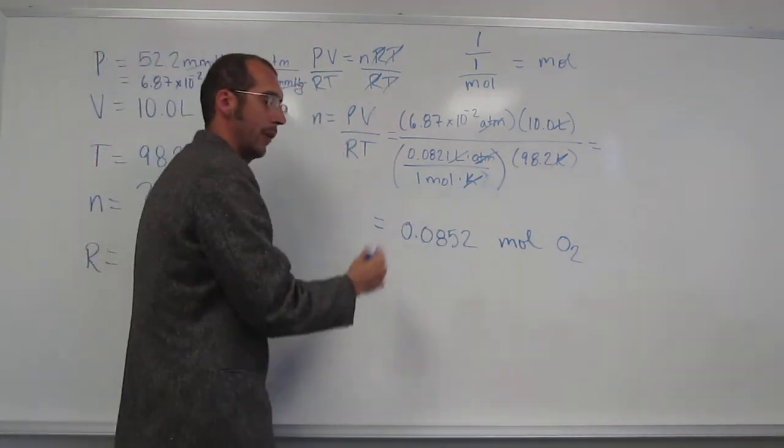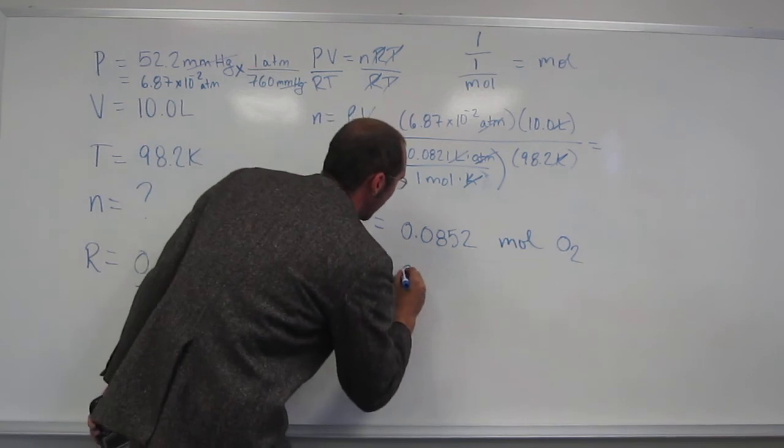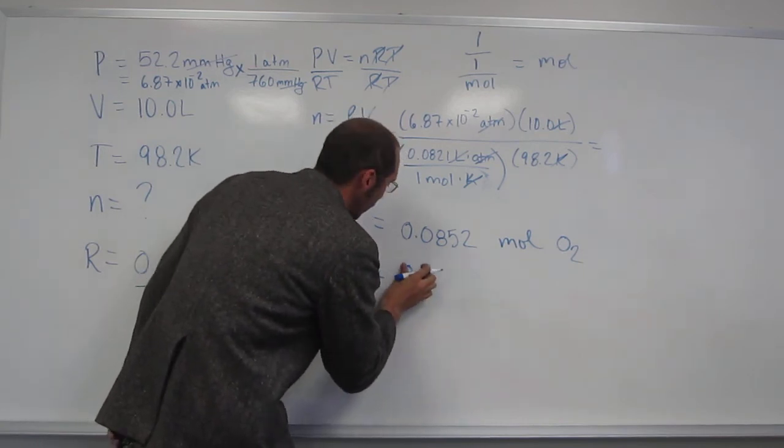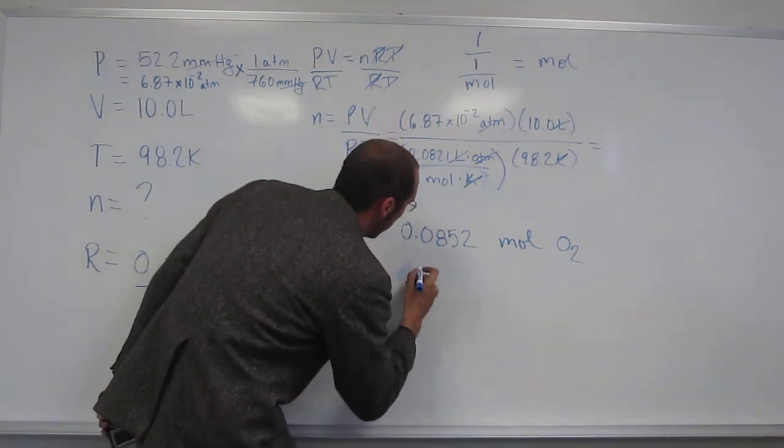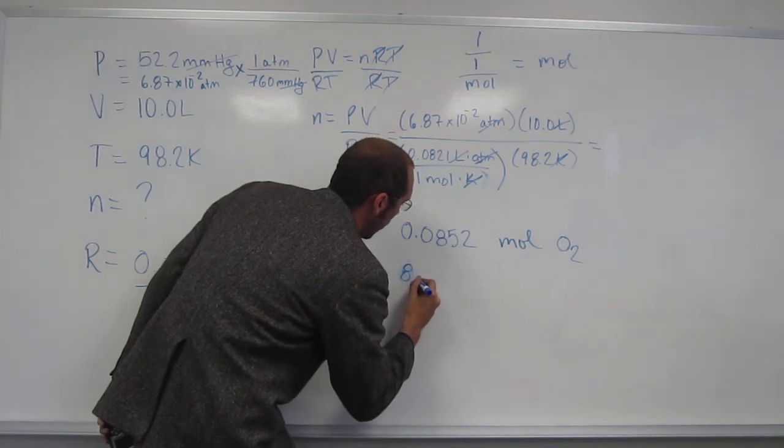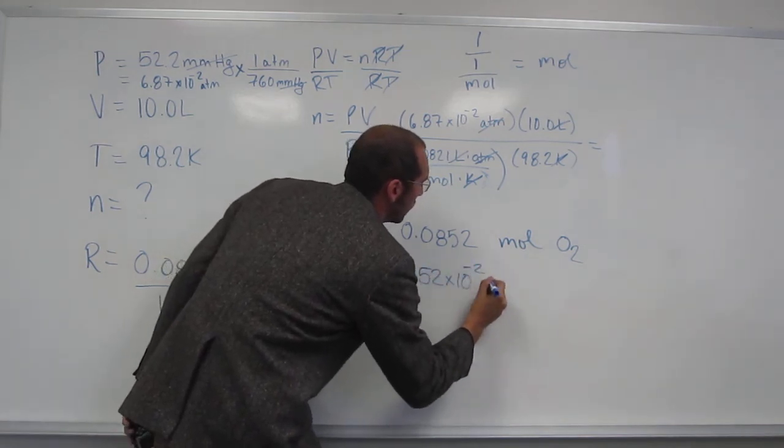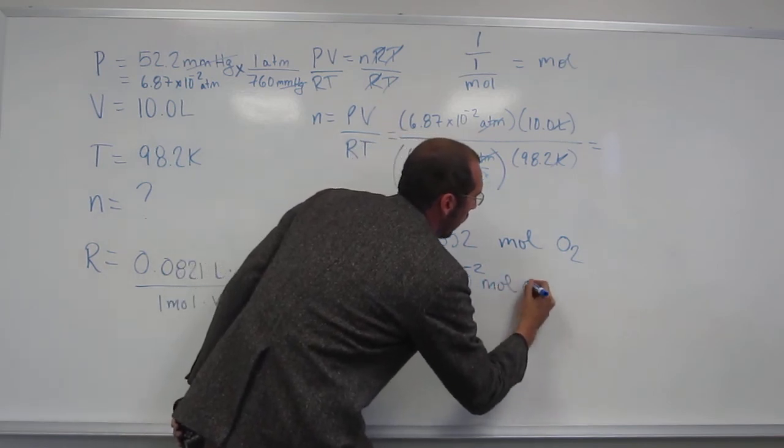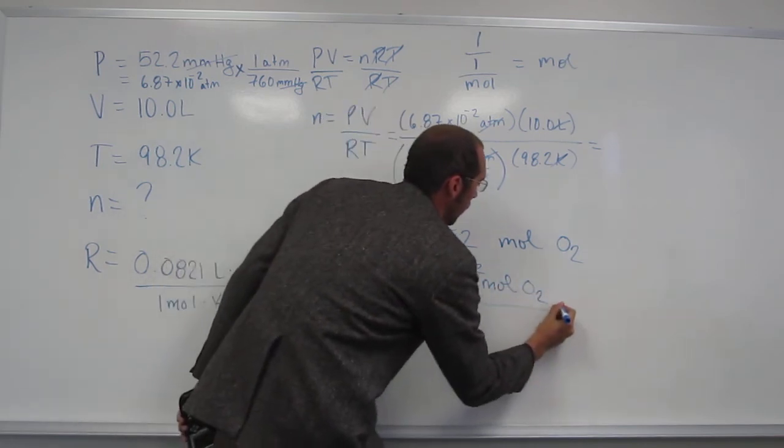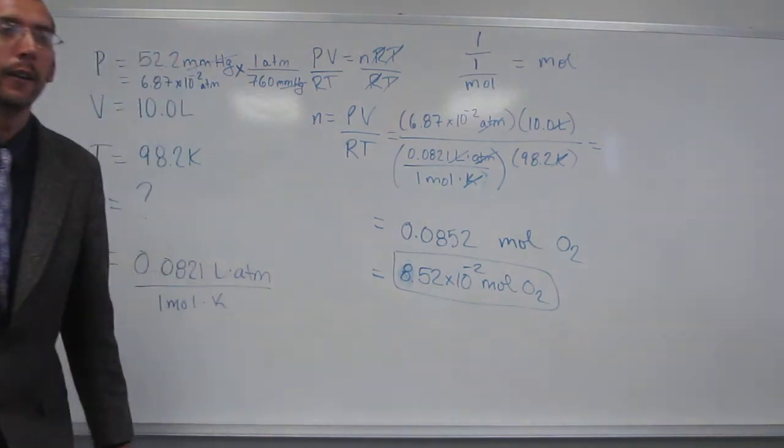0.0852 moles of O2, if you really wanted to. And, then, to put it into scientific notation, because that's what we do in chemistry class. But, if you didn't, I would still give you all credit for it. So, 8.52 times 10 to the negative 2 moles of O2. Like that.